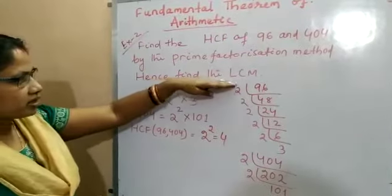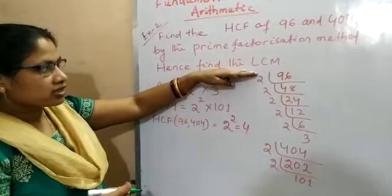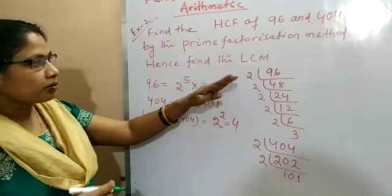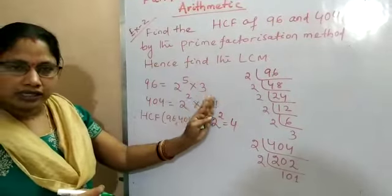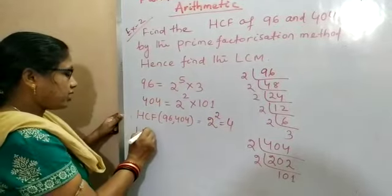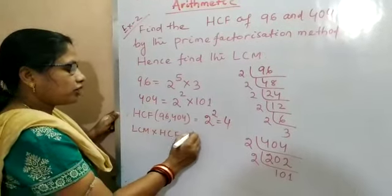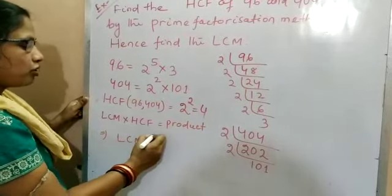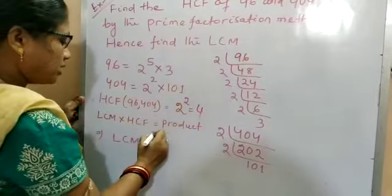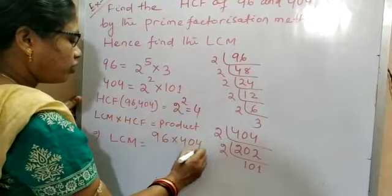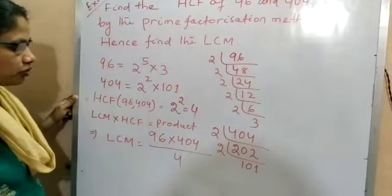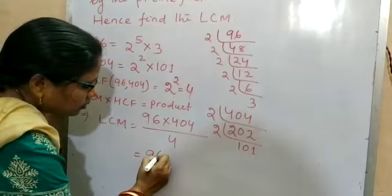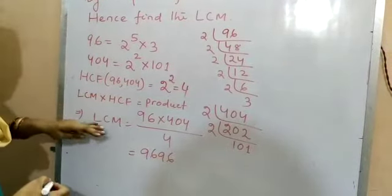The next part asks to find the LCM. The question does not ask for LCM by prime factorization method, so we use the rule: HCF × LCM = product of the two numbers. So LCM = (96 × 404) ÷ HCF = (96 × 404) ÷ 4 = 24 × 404 = 9,696. So our LCM is 9,696.